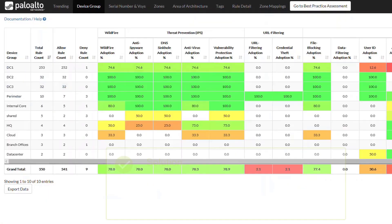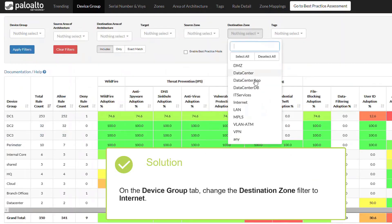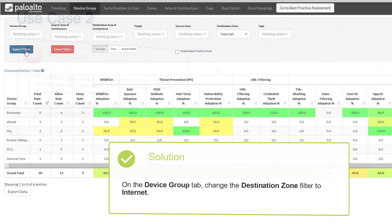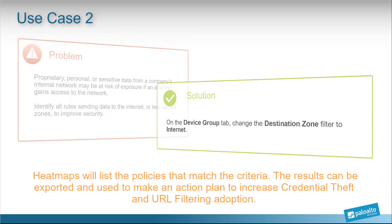To identify rules going to the internet, change the destination zone filter to internet on the device group tab and apply the filter. Heatmap specifically lists the policies that match this criteria, which can be exported and made into an action plan for increasing adoption for credential theft and URL filtering.